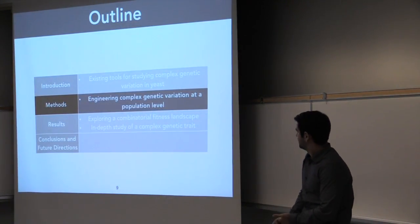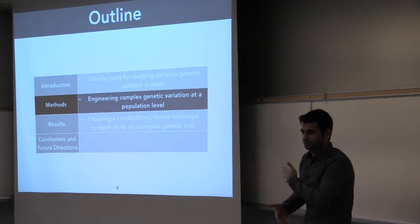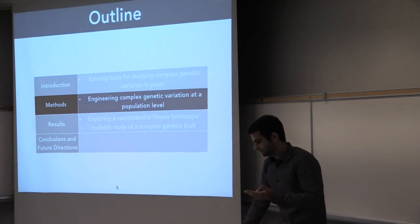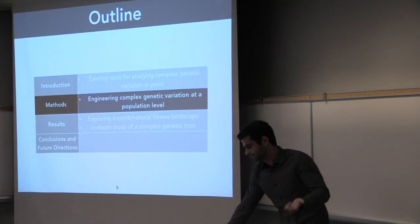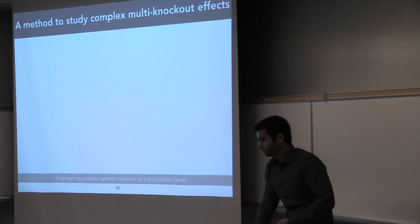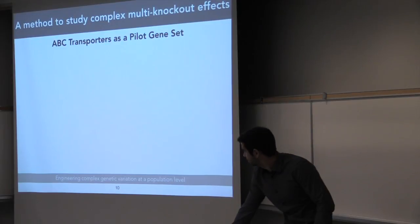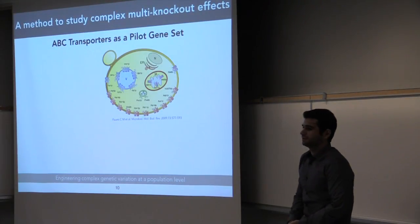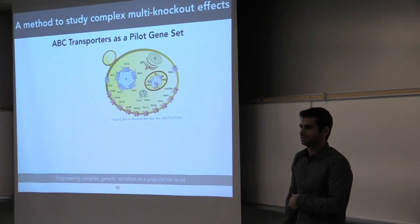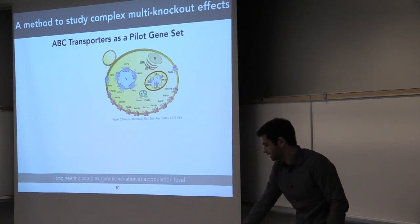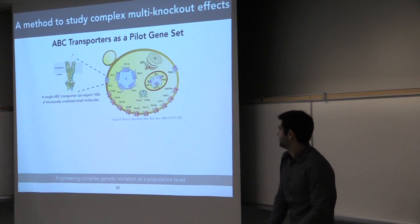So this is our method, which actually is the one part I'll have to skip here mostly to engineer this variation on the population level. So our pilot gene system are the ABC transporters. The yeast cell has 22 ABC transporters that are known, 16 of which are in gene families involved in multi-drug resistance. Any given ABC transporter can export hundreds of structurally unrelated small compounds, so they're important in drug resistance.